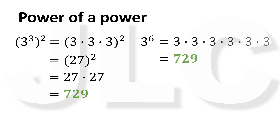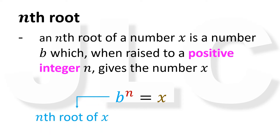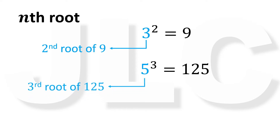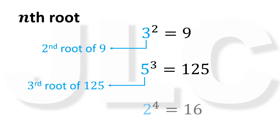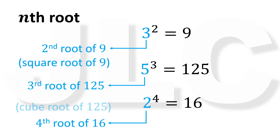The second concept is the nth root. An nth root of x is a number b which, when raised to a positive integer n, gives x. That is, if b raised to n equals x, then b is an nth root of x. For example, since 3 squared equals 9, then 3 is the second root of 9. Since 5 cubed equals 125, then 5 is the third root of 125. Since 2 raised to 4 equals 16, then 2 is the fourth root of 16. The second root is called the square root, and the third root is called the cube root.